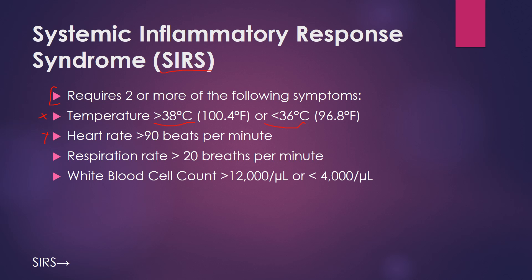A respiration rate of greater than 20 breaths per minute and a white blood cell count of over 12,000 units per liter are also qualifiers for systemic inflammatory response syndrome. One important thing to point out is that each one of these criteria needs to be taken with a grain of salt, because some patients naturally have a heart rate above 90 beats per minute — they would have that whether they're having an infection or not. So this is something you need to take into consideration before you jump to conclusions.